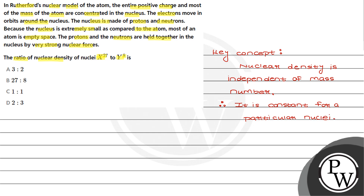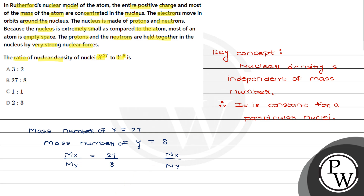Let us see the solution. We can take the mass numbers. Mass number of X is 27, and mass number of Y is 8. So if we write the ratio Mx divided by My, it is 27 by 8. But since nuclear density is independent of mass number, the nuclear density of X divided by the nuclear density of Y equals n over n.